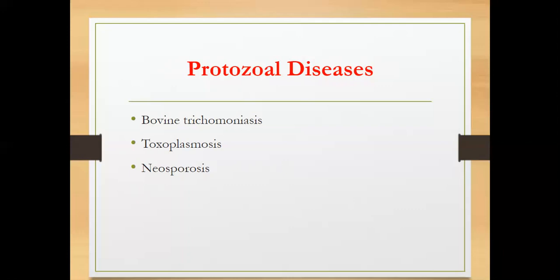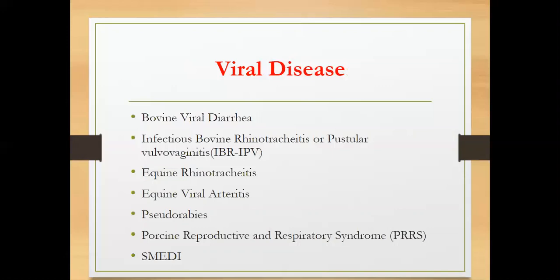The causative agent of toxoplasmosis is Toxoplasma gondii, already introduced in principles of animal science. Its effect is late abortion. Neosporosis is caused by Neospora caninum — although it sounds like it's from a dog and was discovered in dogs, its natural hosts are cattle. Neosporosis causes abortion in all stages of gestation, whether early or late.